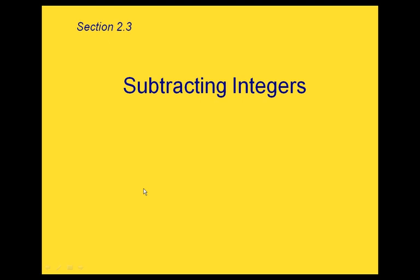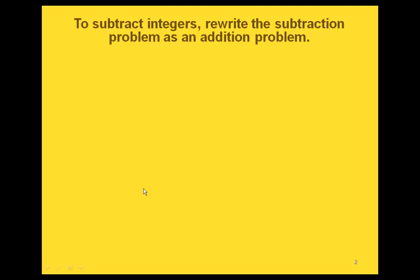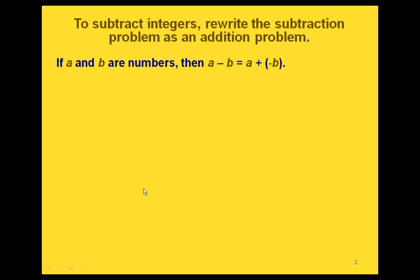This is section 2.3, subtracting integers. When we subtract integers, we're going to rewrite the subtraction problem as an addition problem. The way we do this is by using the opposite of a number. So if we have two numbers a and b and we're trying to subtract them, instead of subtracting we're going to be adding the opposite of the number.